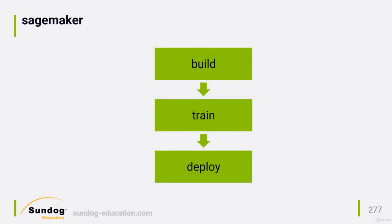Using SageMaker involves three steps: building your model, training your model, and deploying your model. Let's start with building.